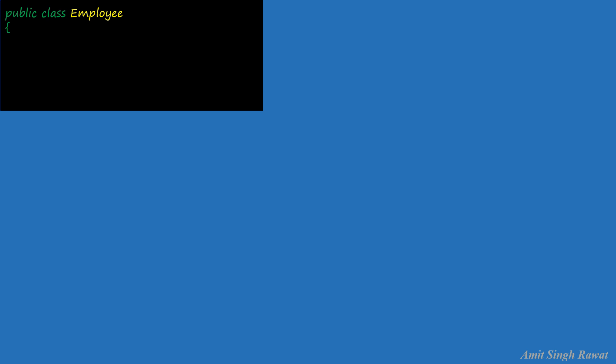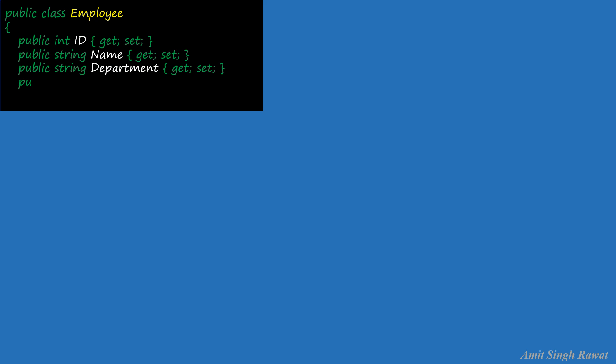Let's create those classes in Visual Studio. The first class will be Employee: public class Employee. Let's put some dummy properties like id of type integer, name and department of type string, and salary of type integer. Our first class is ready.